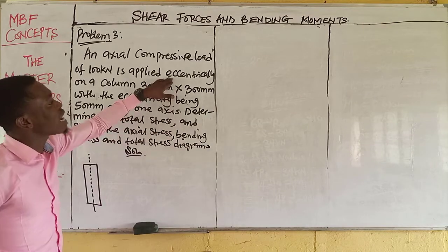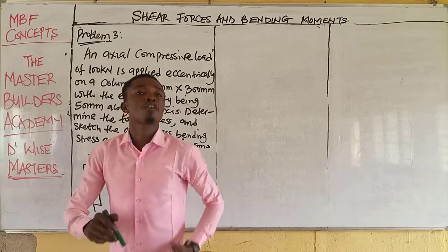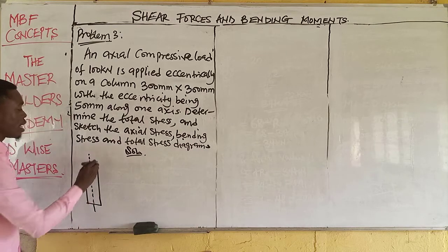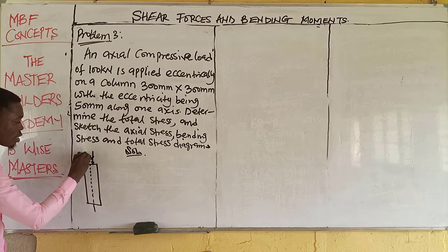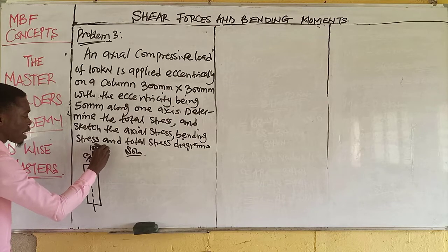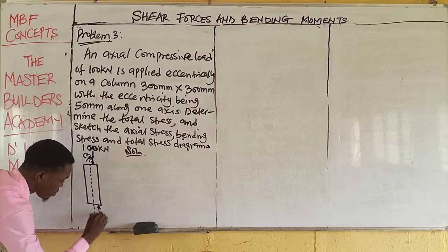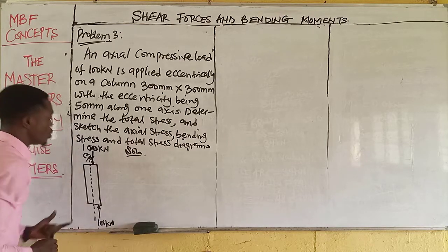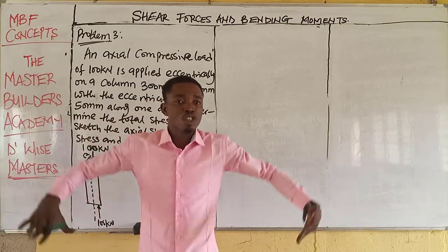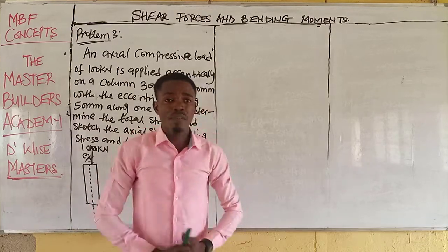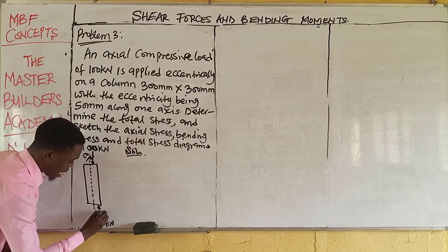Let's look at this question. This system is loaded eccentrically — there is eccentricity of the load from the neutral axis. The load may be acting at some offset from the neutral axis, and between the neutral axis and that point is the eccentricity. The load is 100 kN and this is a compressive load — a load that tends to compress or reduce the length of the system. These compressive stresses are acting on the system at an eccentricity.